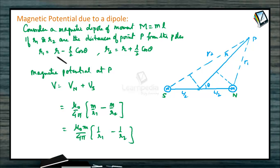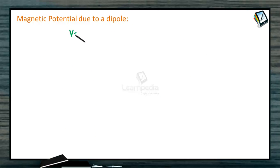We can substitute the R1 R2 values. R minus L by 2 cos theta in place of R1, R plus L by 2 cos theta in place of R2. So V equals mu naught M by 4 pi, 1 by R minus L by 2 cos theta minus 1 by R plus L by 2 cos theta.